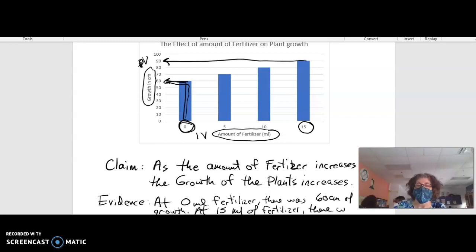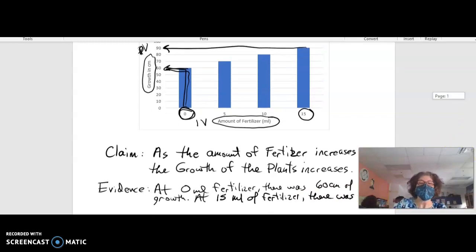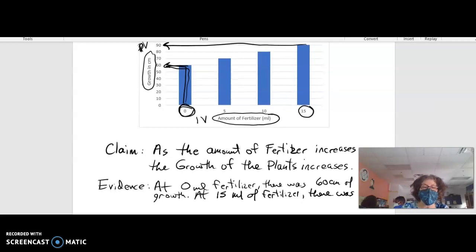Then my second sentence is going to use this data. At 15 milliliters of fertilizer, there was 90 centimeters of growth.